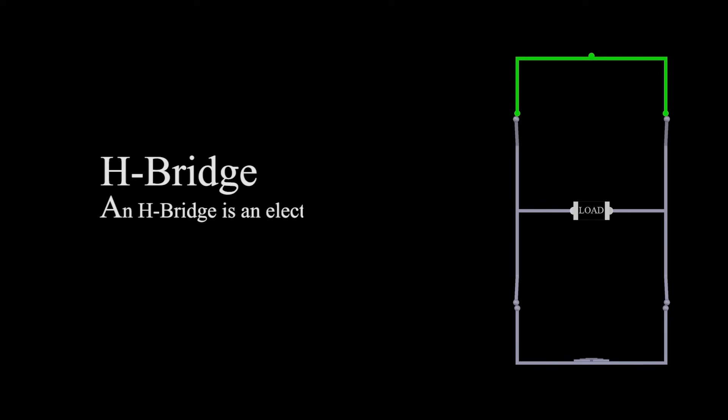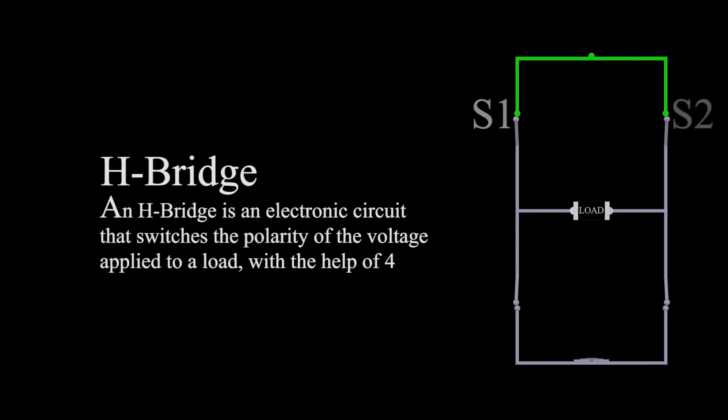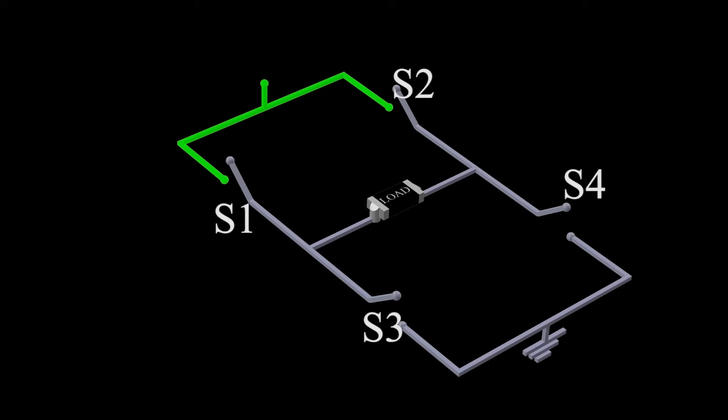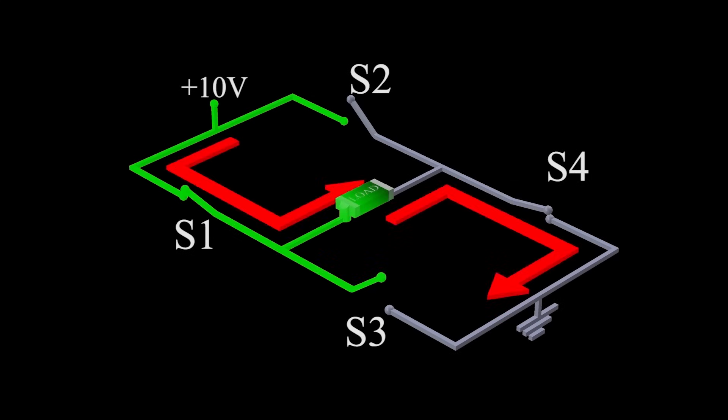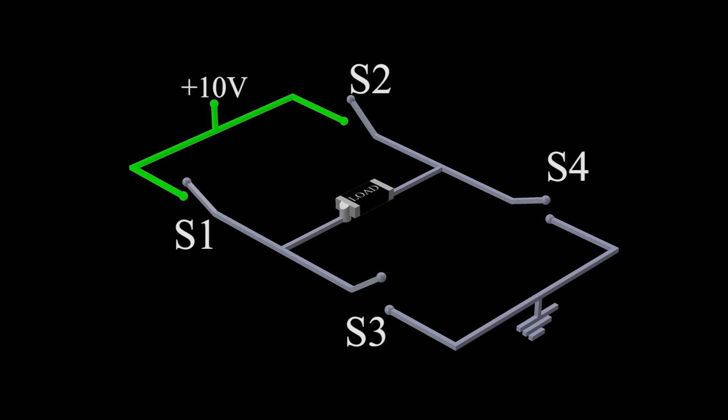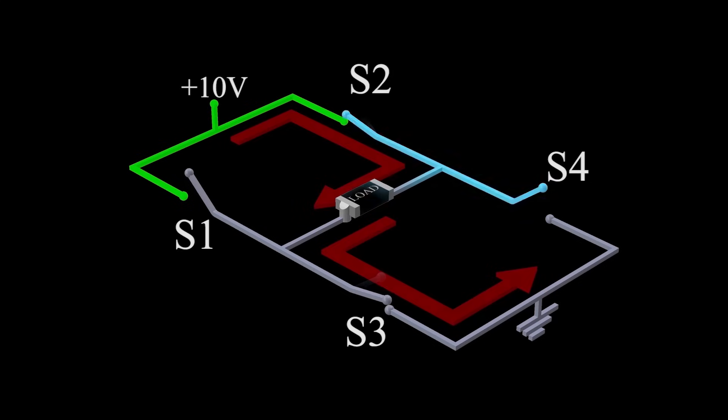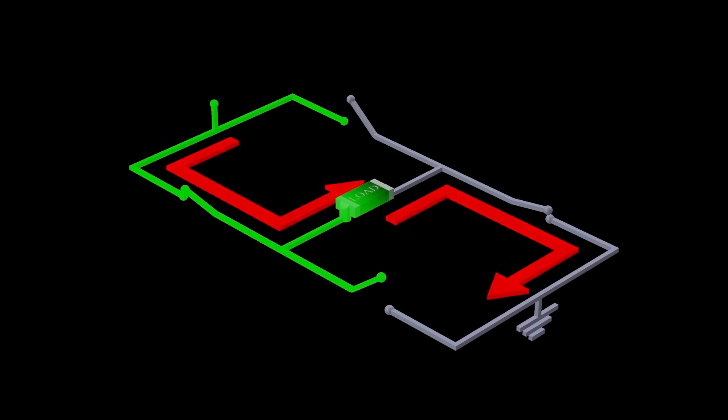An H-bridge is an electronic circuit that switches the polarity of the voltage applied to a load, with the help of four switches. When switches S1 and S4 are on, the current flows through the load in this direction. And when switches S2 and S3 are on, the current flows through the load in the other direction, thus alternating the flow of current through the load.